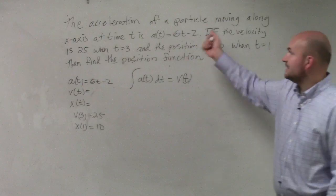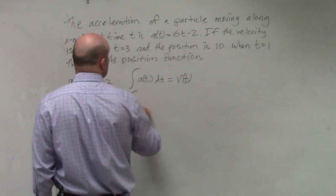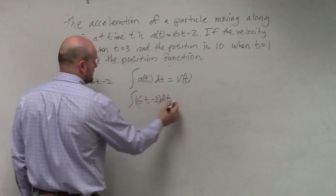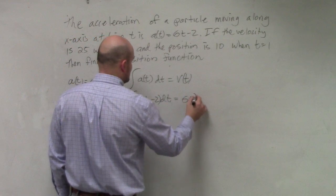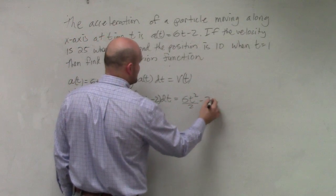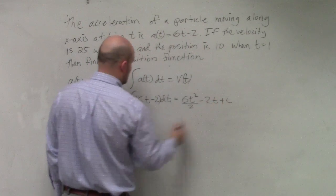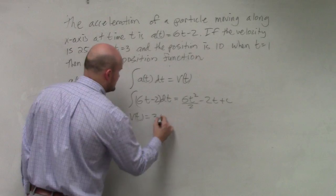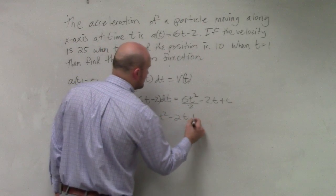So to integrate this, I have 6t minus 2 dt. That equals 6t squared divided by 2 minus 2t plus c. V sub t equals 3t squared minus 2t plus c.